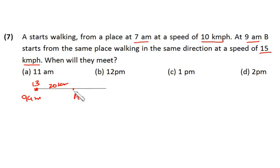that A is also walking. That means A is also not going to stop. A will be moving with the speed of 10 km per hour, and B is moving with the speed of 15 km per hour.